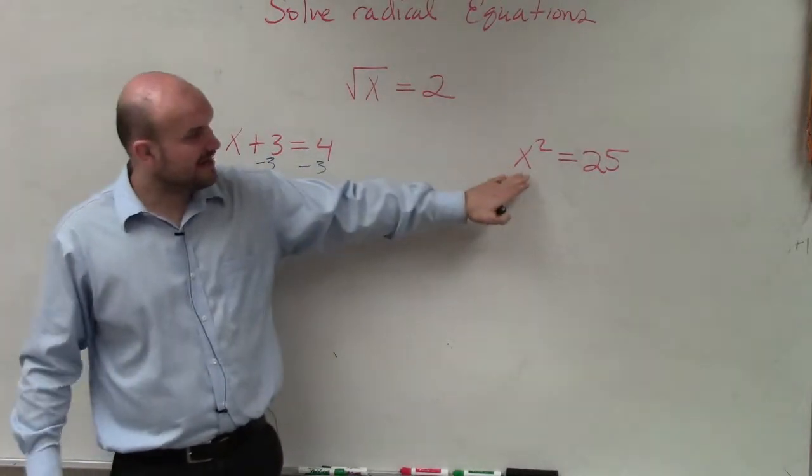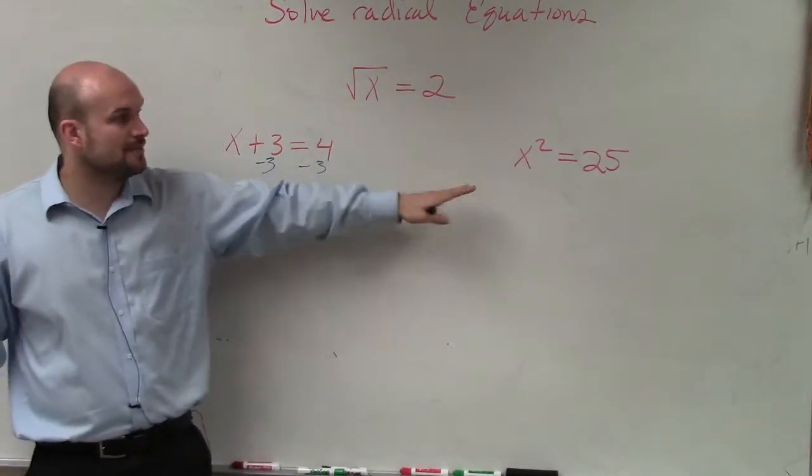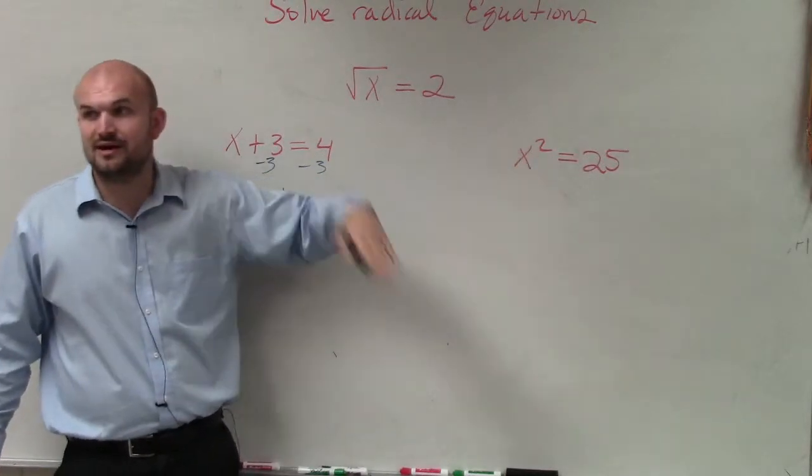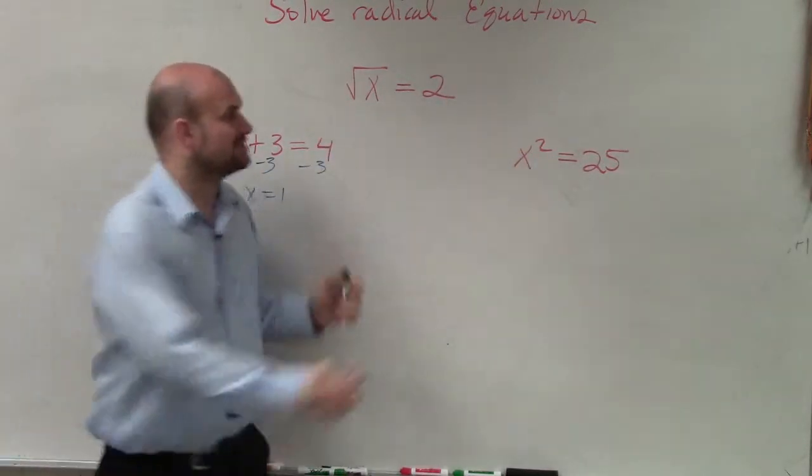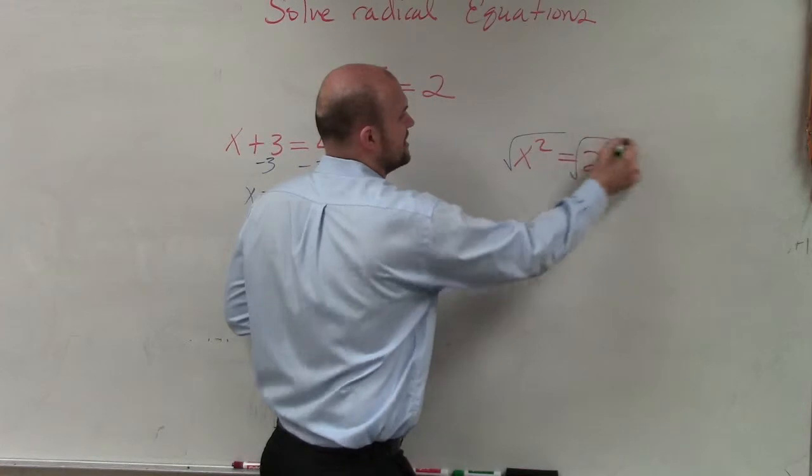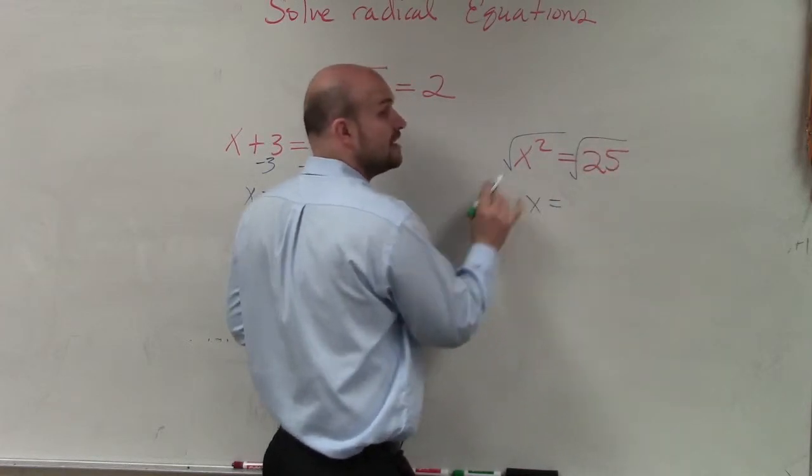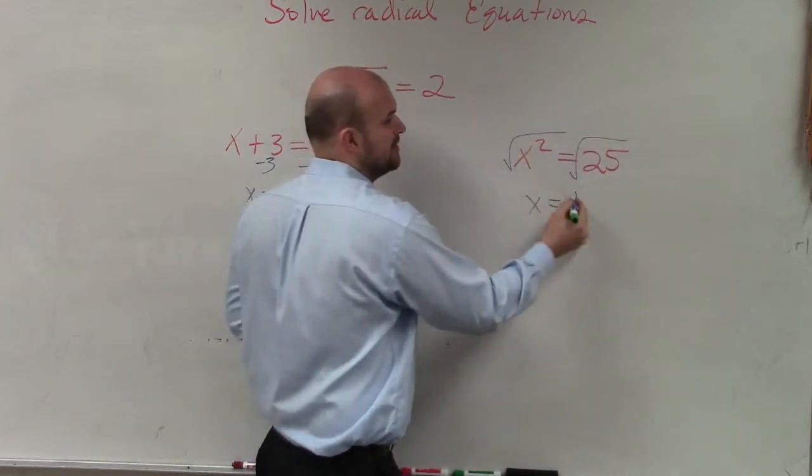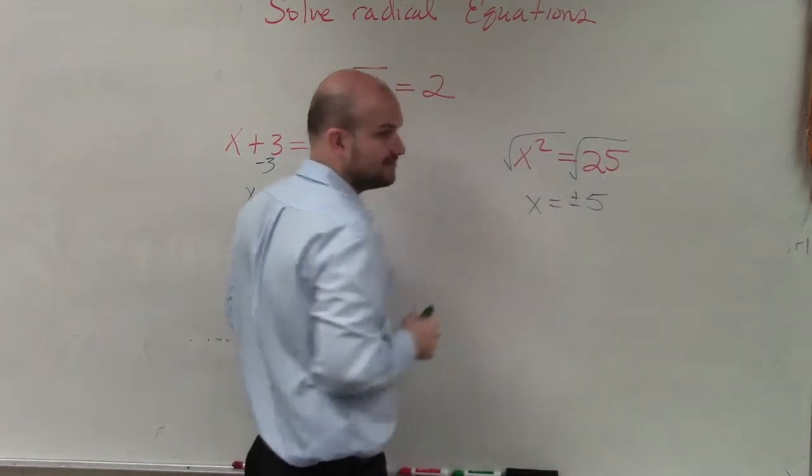For instance, if I had x squared equals 25, well, the inverse operation of squaring is to take the square root. So we would take the square root on both sides. So therefore, x would equal—now remember, when we introduce the square root, we have plus or minus 5.